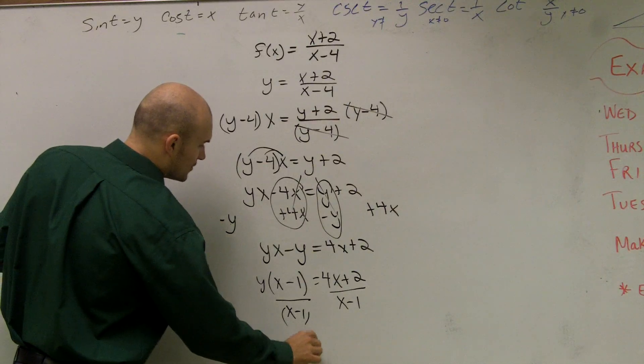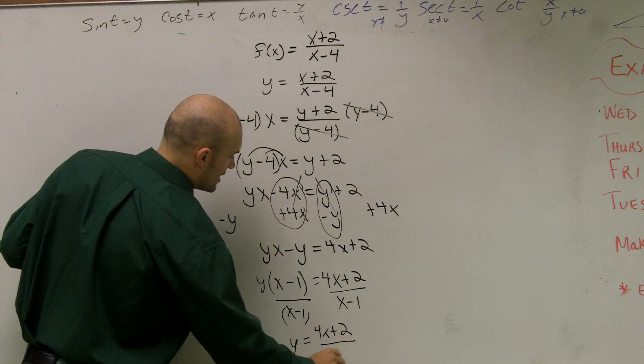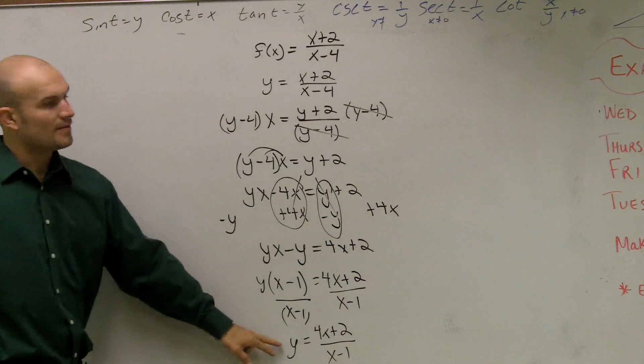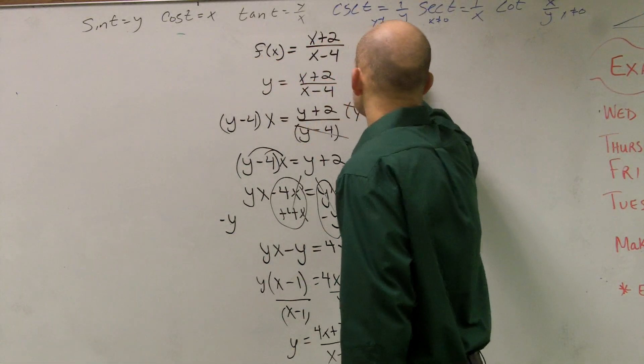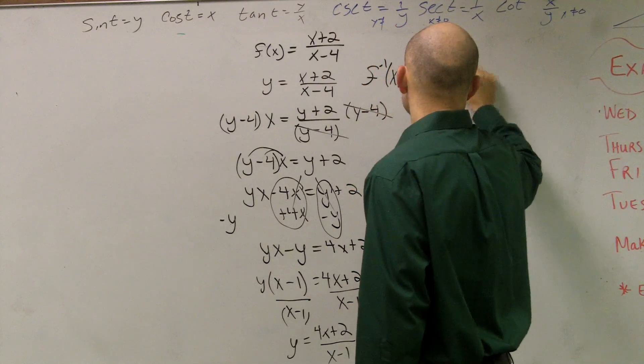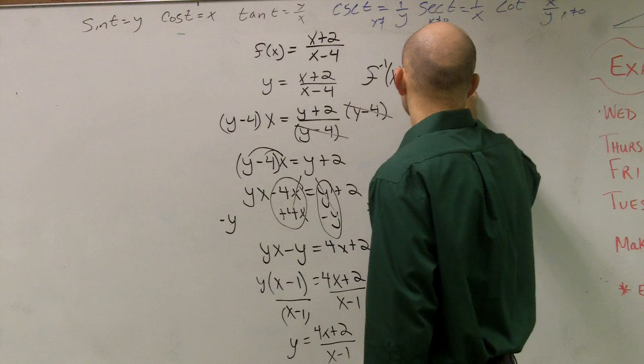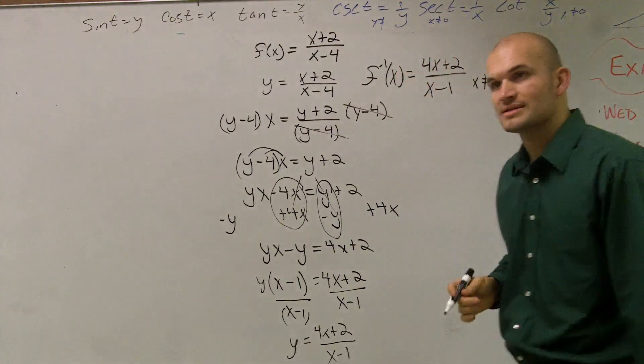And therefore, I have y equals 4x plus 2 divided by x minus 1. Then the last thing is to rewrite it in function notation. So f inverse of x equals 4x plus 2 divided by x minus 1, where x cannot equal 1, because that makes zero on the bottom.